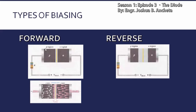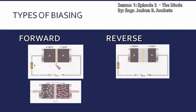Pwede rin nating i-consider ang forward bias diode na closed switch. So kapag closed switch, meron tayong path or the electron flow. Dito rin mapapansin natin, kapag forward bias, yung depletion region natin manipis lang — ito yung tinatawag na narrow depletion region.